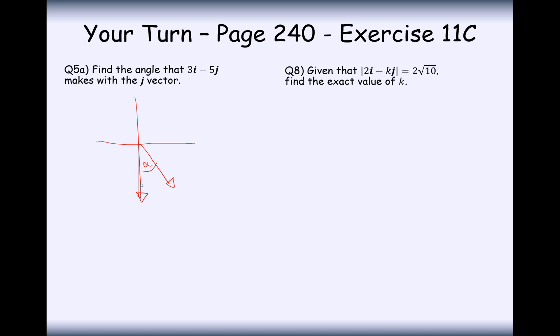This is the angle that we want to find out. We're told that this point here is 3 across and 5 down. So in terms of tan here, this is going to be opposite over adjacent, so that's 3 over 5. Our final answer here to question 1 is going to be tan minus 1 of 3 over 5, which gives us 31 degrees.